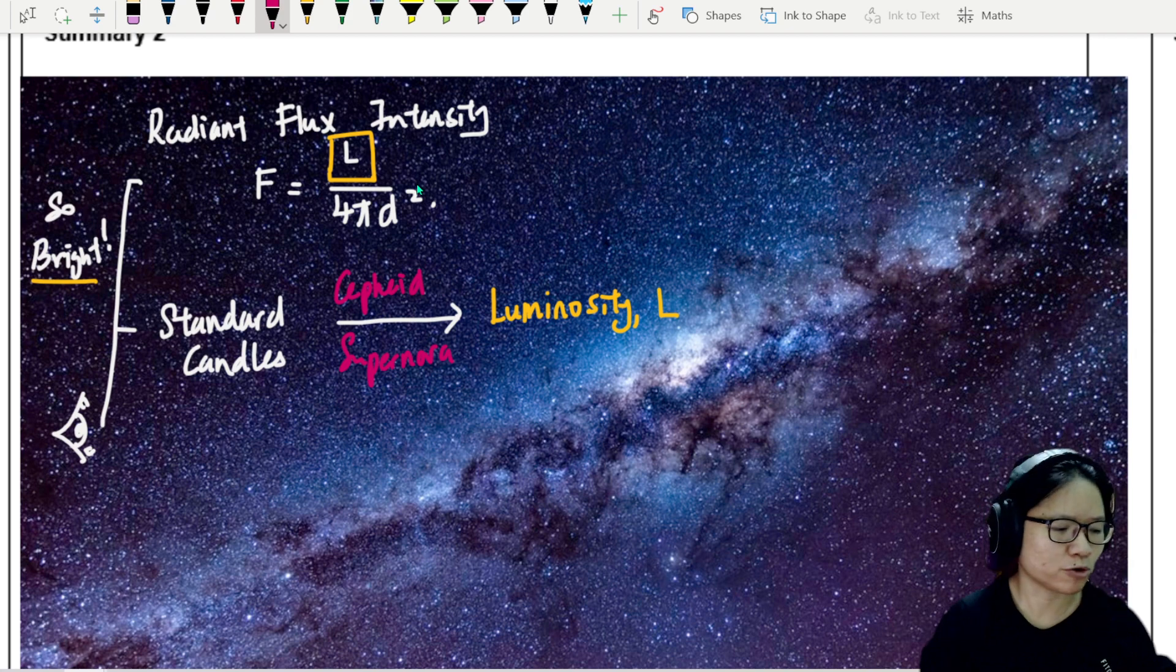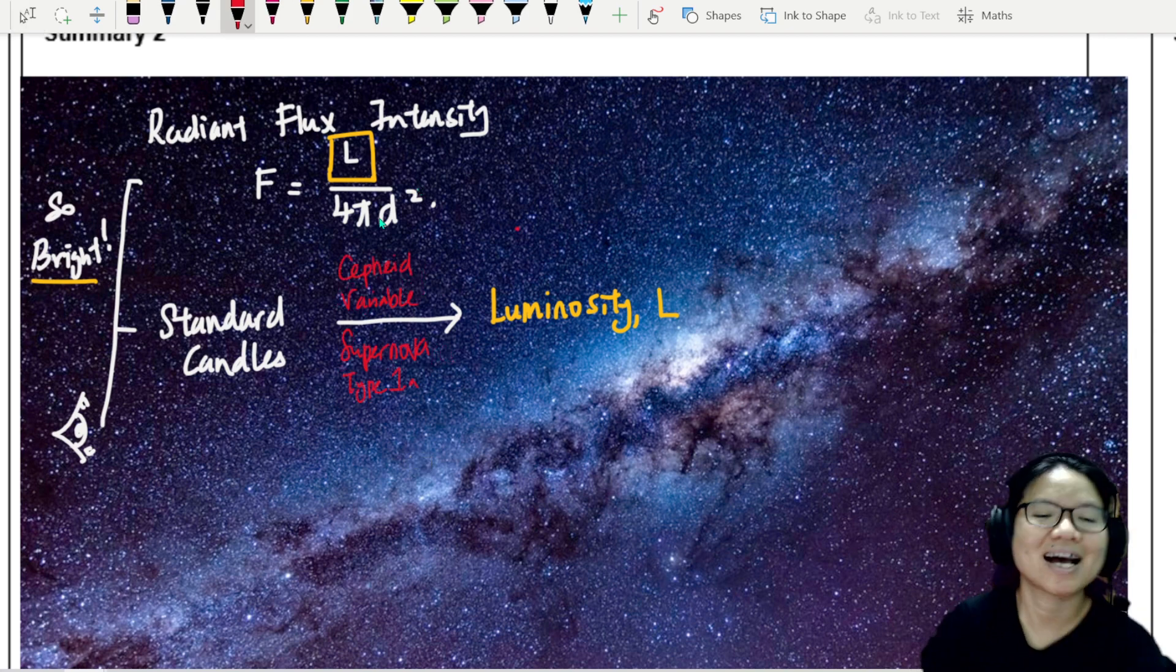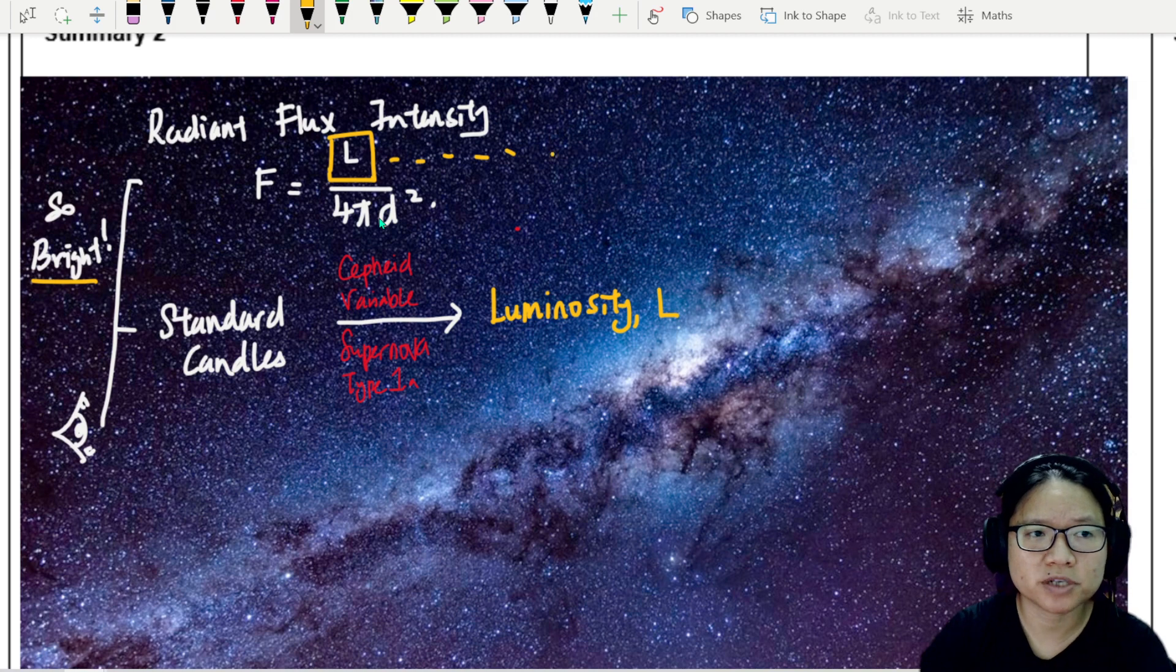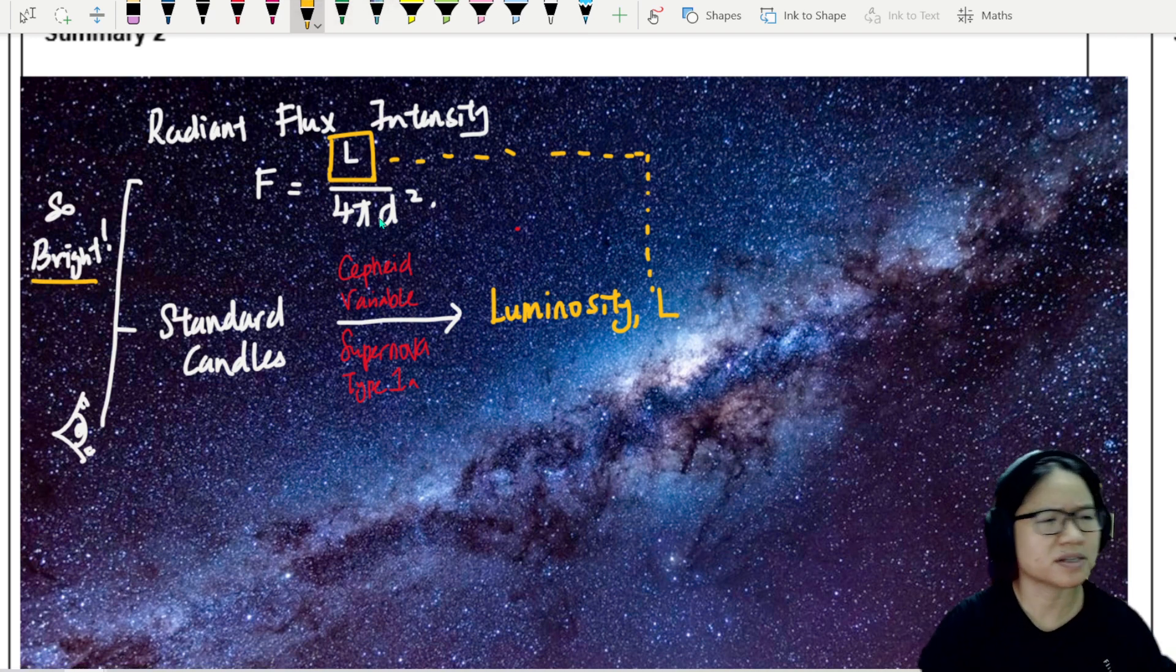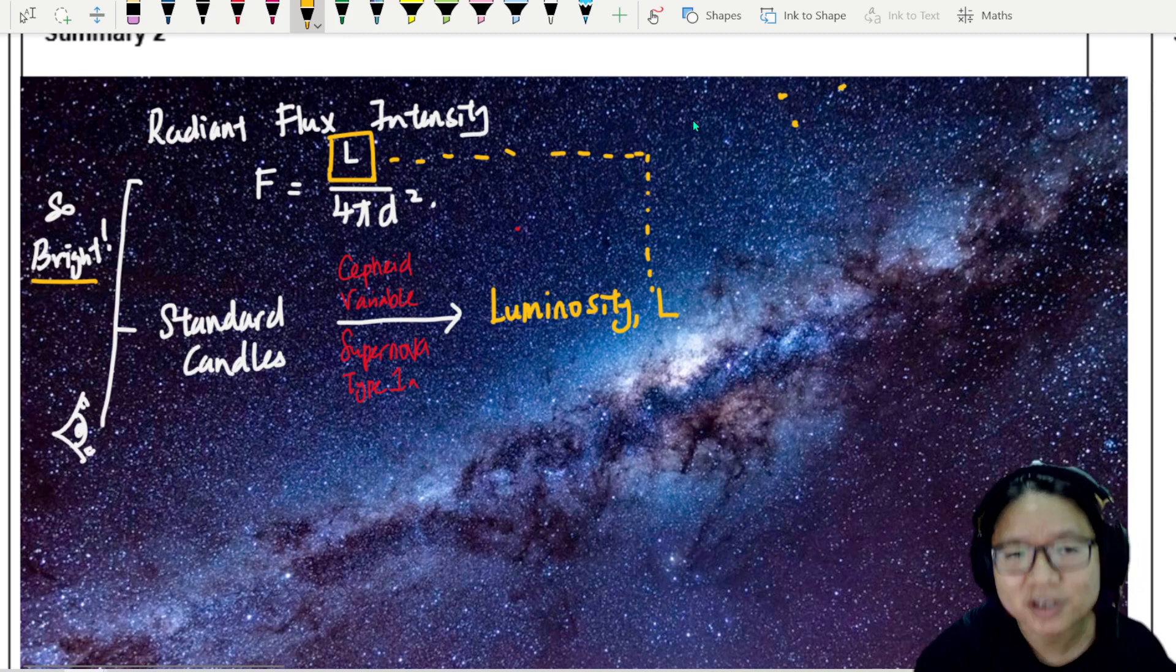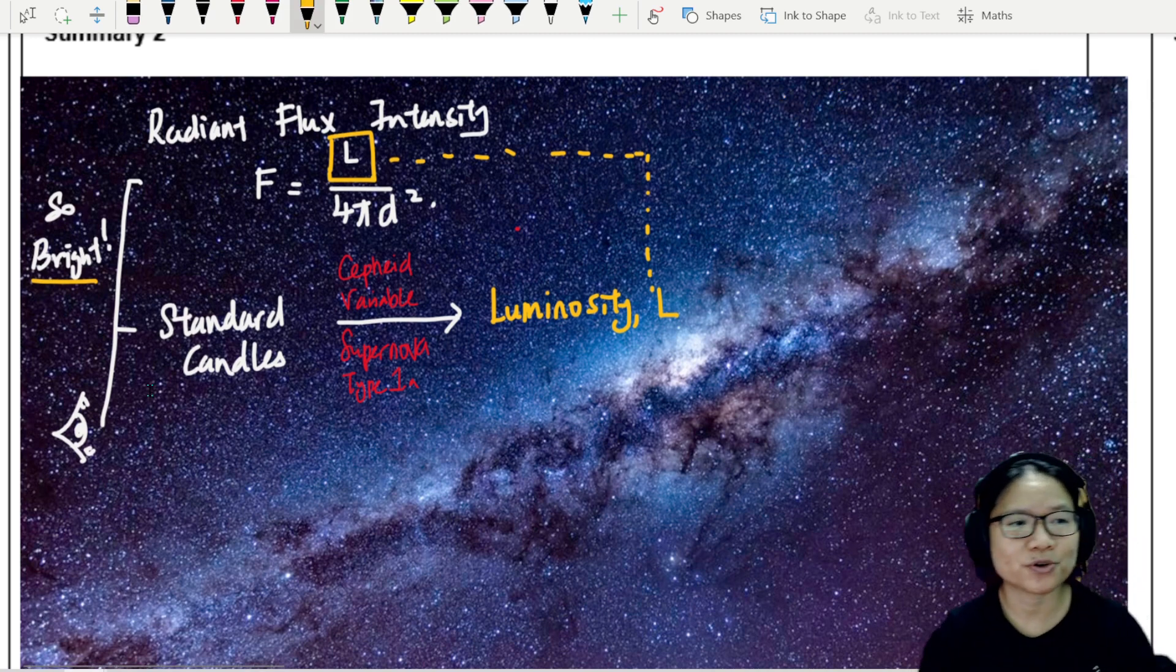So we've also included some examples on how to find the luminosity, mainly using standard candles, such as a Cepheid variable or your supernova type 1a. So from here, we can actually seek out the luminosity. This is how they are tied together.